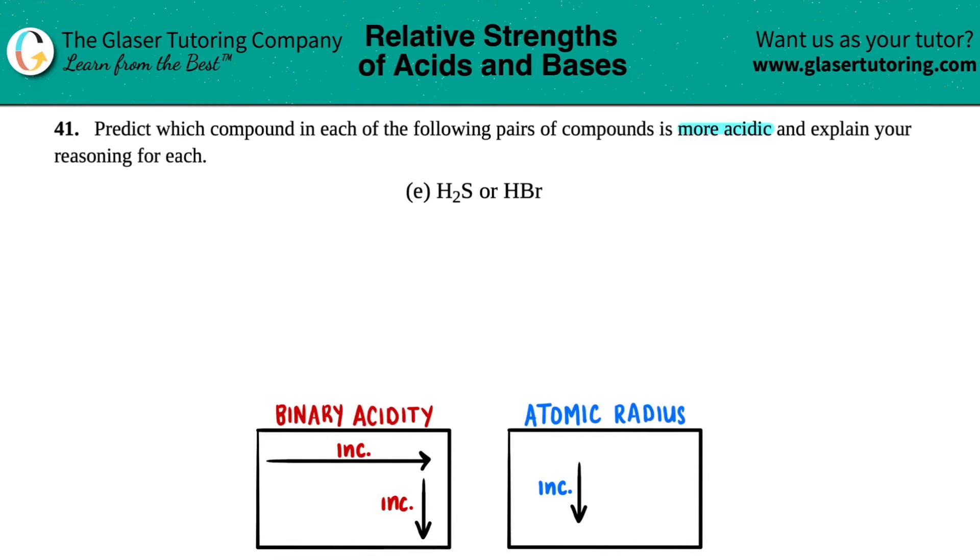Now you might know this answer because you might have memorized your six strong acids and HBr is on that list. H₂S unfortunately didn't make the cut. So by just knowing that HBr is one of our six strong acids, we already know which one is more acidic. So we know that HBr is going to win. That's one sure way to kind of quick answer the question.